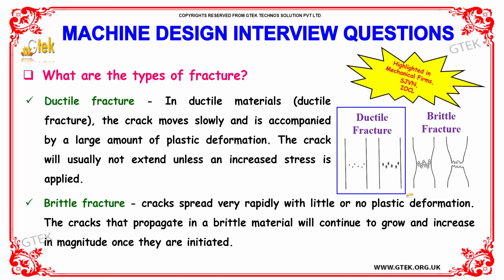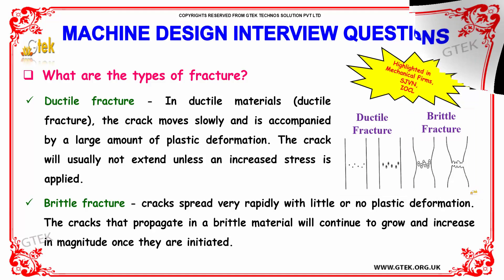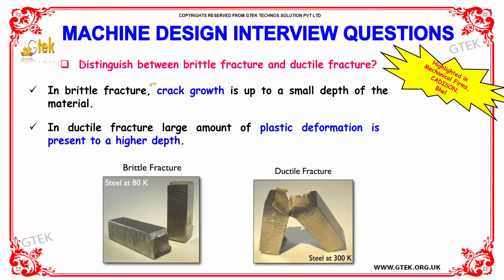You can see here the depiction of ductile fracture and brittle fracture. Distinguishing between them: in brittle fracture, crack growth is up to a small depth of the material, while in ductile fracture, a large amount of plastic deformation is present to a higher depth. A comparison of steel at 80 Kelvin and steel at 300 Kelvin is also shown.